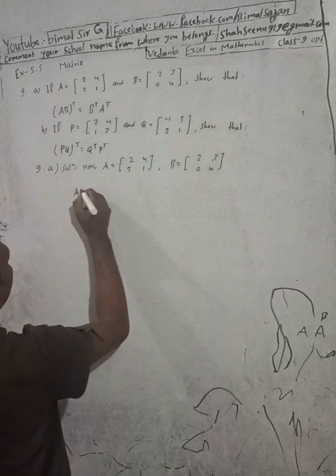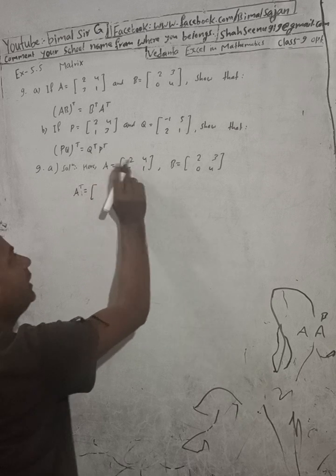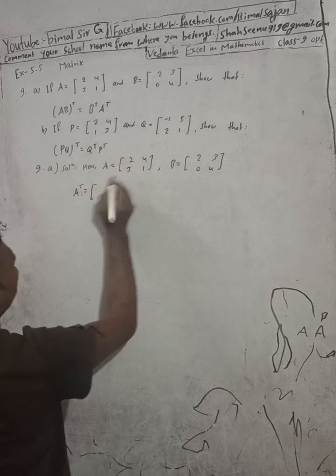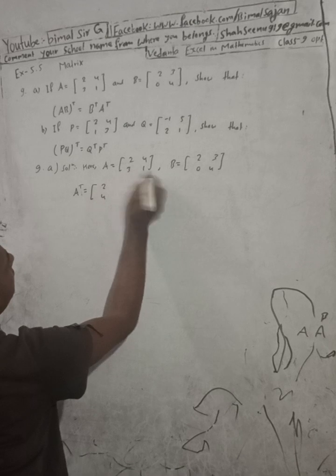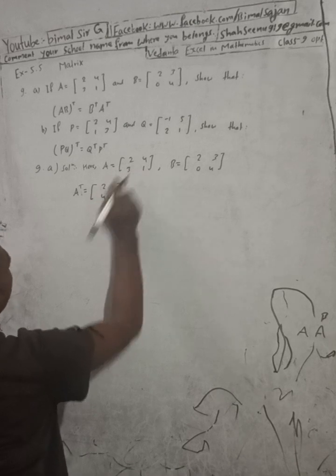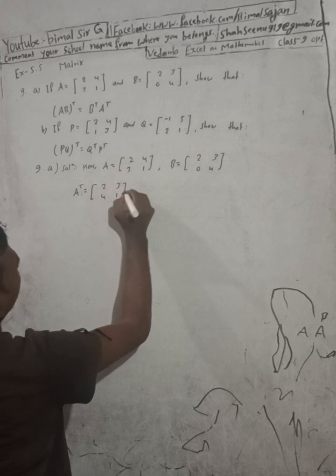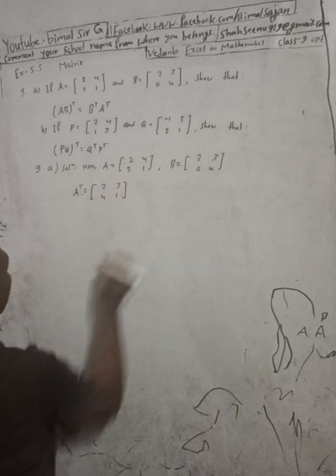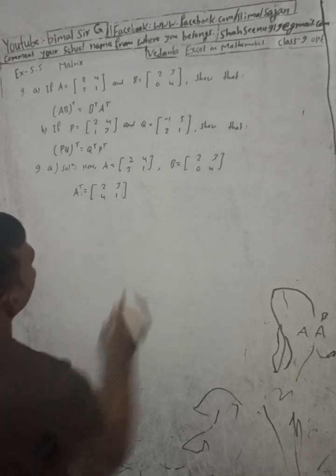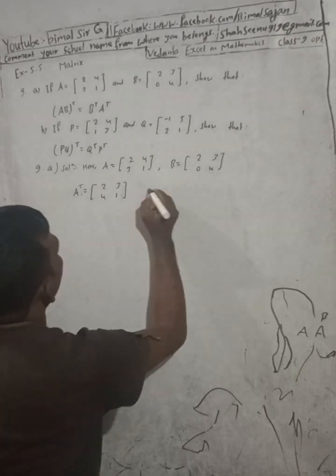A transpose means interchange row and column. The first row [2,4] becomes the first column, and the second row [3,1] becomes the second column. So A transpose is [2,3; 4,1].